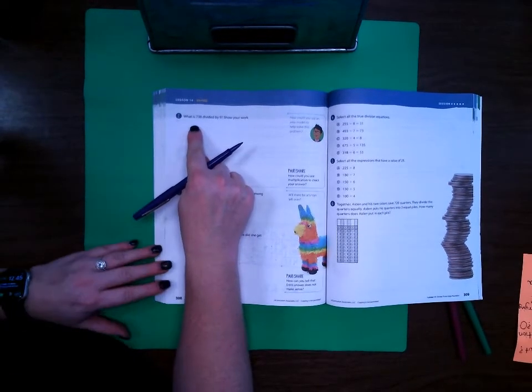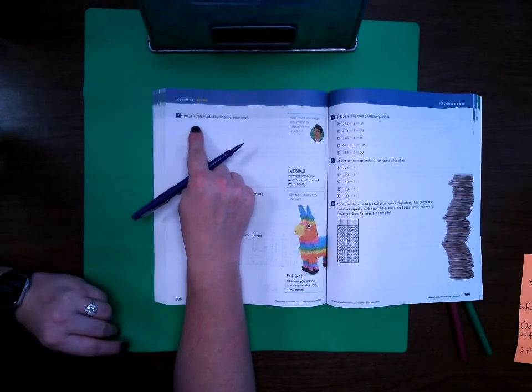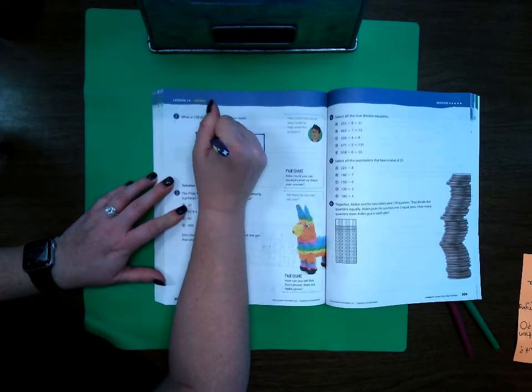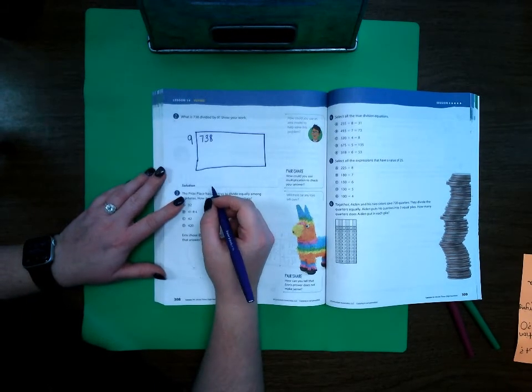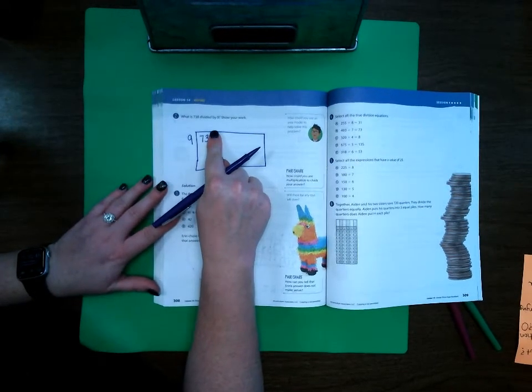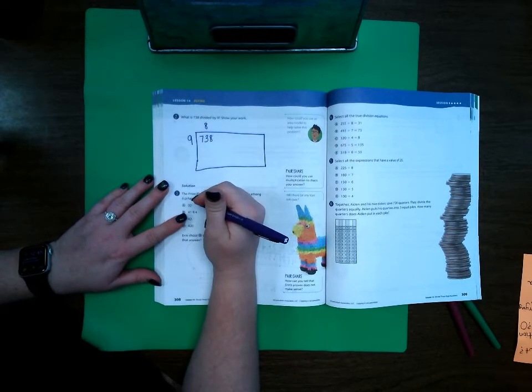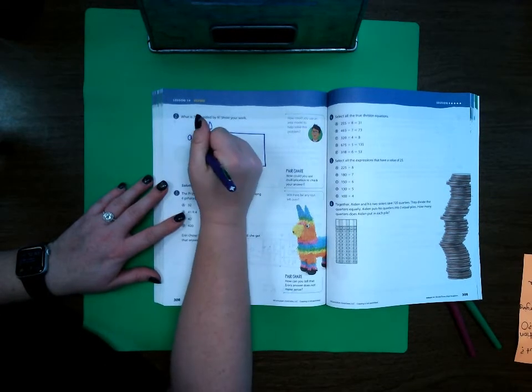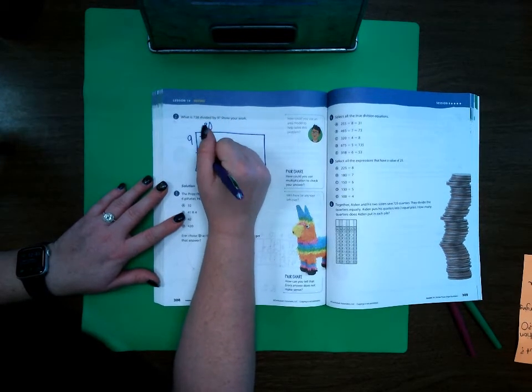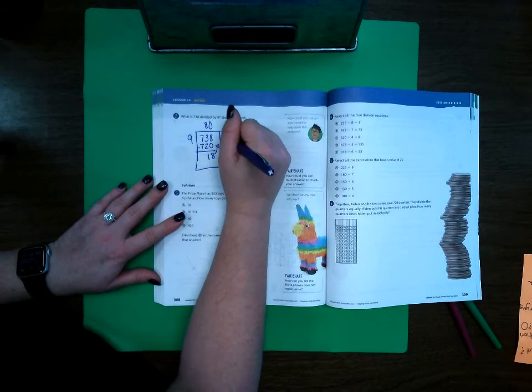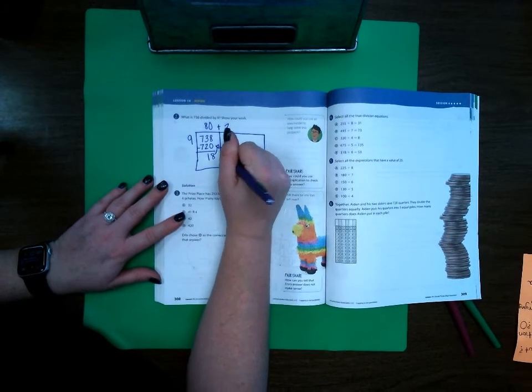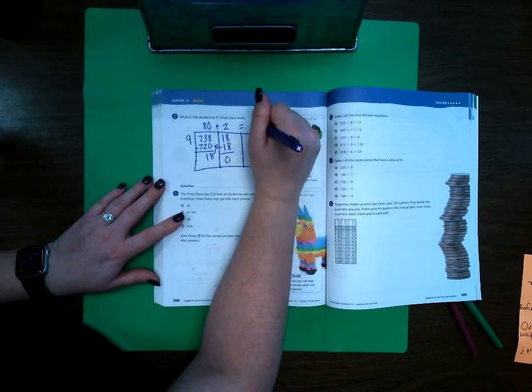All right on page 308 my first problem is 738 divided by 9. Go ahead and do my area model again. So I'm starting with 738 dividing by 9. Well 9 can't go into 7 but if I look at 73 I know that 9 times 8 is 72. So I could do 80, 9 times 80 is 720. Then I subtract that, 8 minus 0 is 8, 3 minus 2 is 1. I'm going to bring my 18 up. I easily know that 9 times 2 is 18 and when I subtract that leaves nothing so my answer is 82.